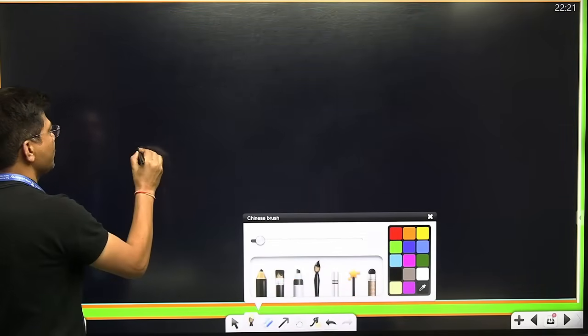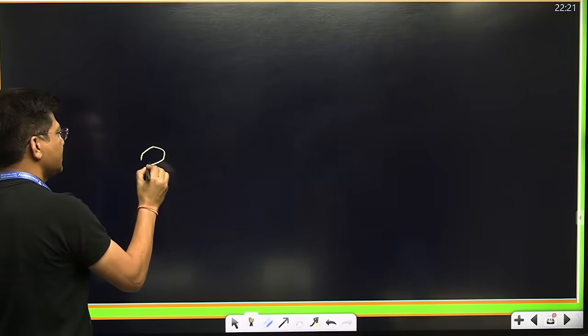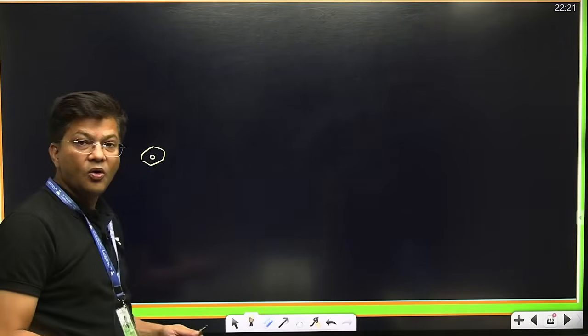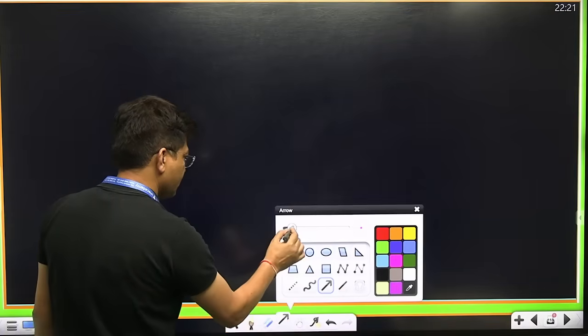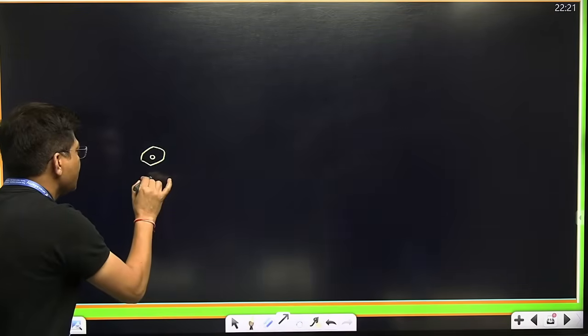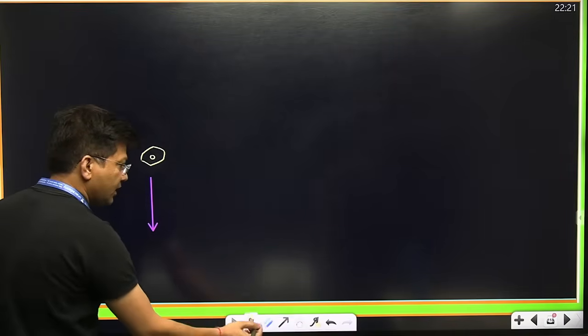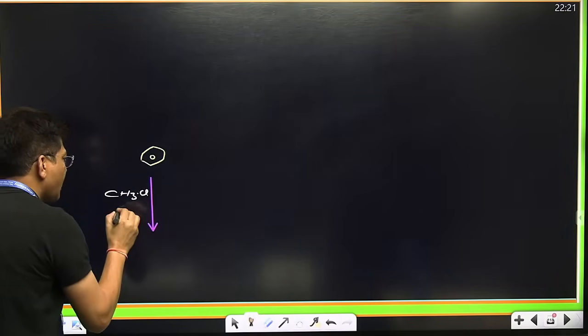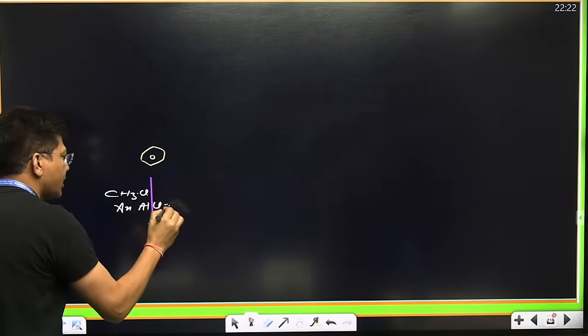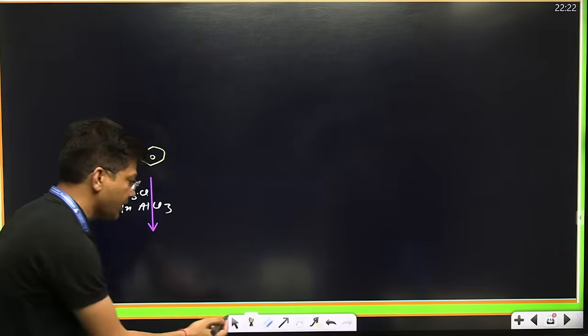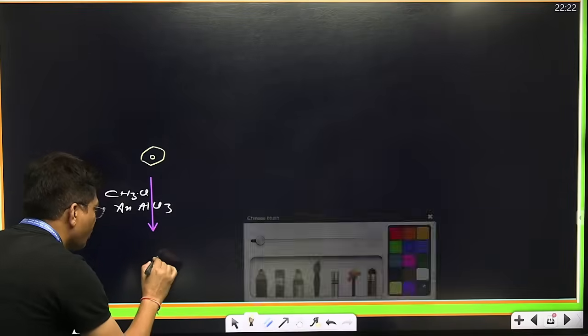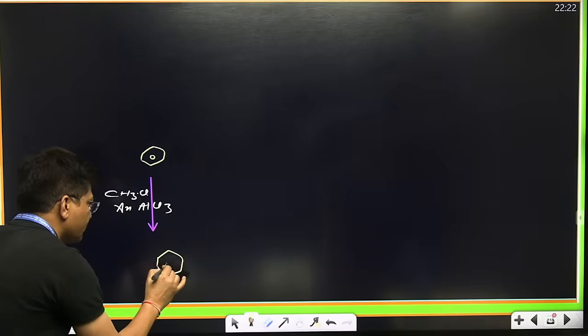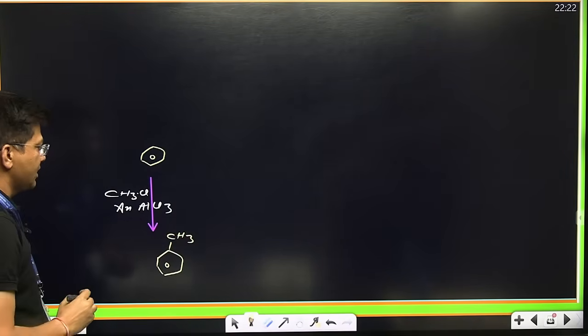You can get 30 to 40 marks directly from here. Let's start with this brilliant mind map. I'm going to write down benzene. This benzene is reacting with methyl chloride CH3Cl and anhydrous AlCl3. You will get toluene, and this is known as Friedel-Craft Alkylation.